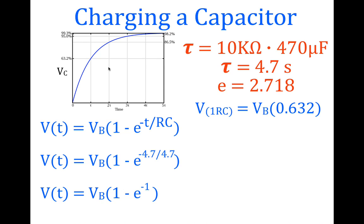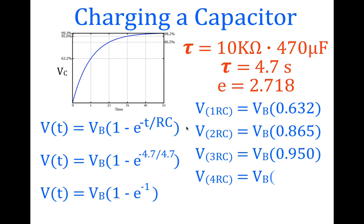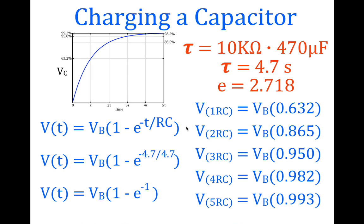For two time constants, substitute t = 9.4 s, or simply use e^(−2), which results in 86.5% of the battery voltage — matching our graph. We do the same for three, four, and five time constants. We stop at five time constants because that's when we consider the capacitor to be fully charged at 99.3% of the battery voltage.